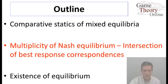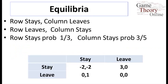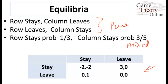Let's revisit the example we just looked at. In the War of Attrition game with these particular payoffs, we had two pure strategy Nash equilibria, one mixed strategy Nash equilibrium, where the row player stayed with probability one-third and the column player stayed with probability three-fifths.